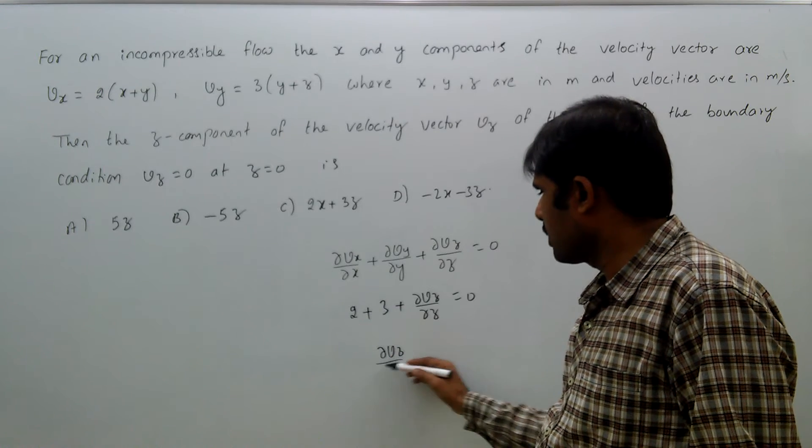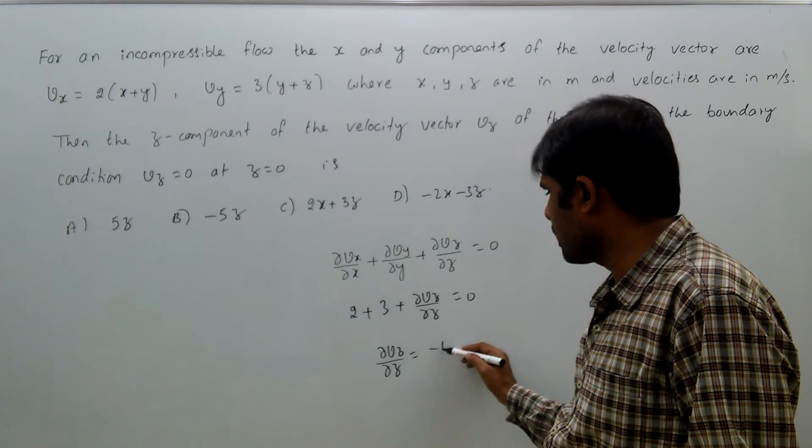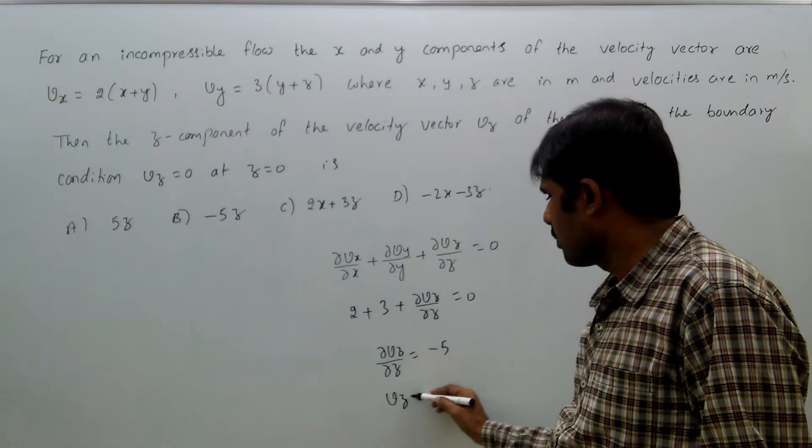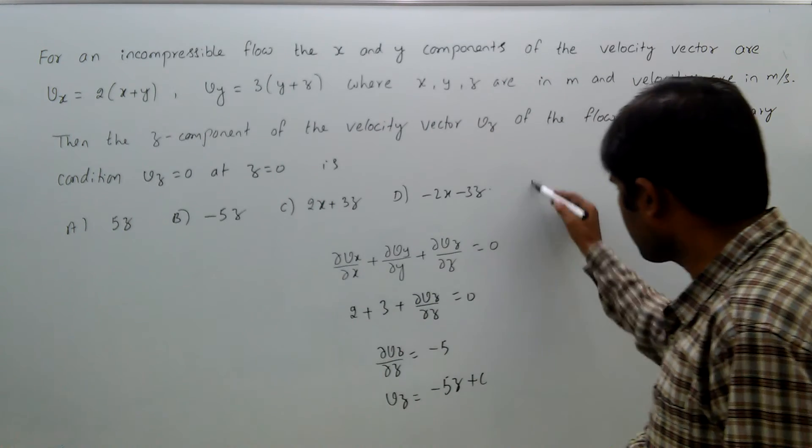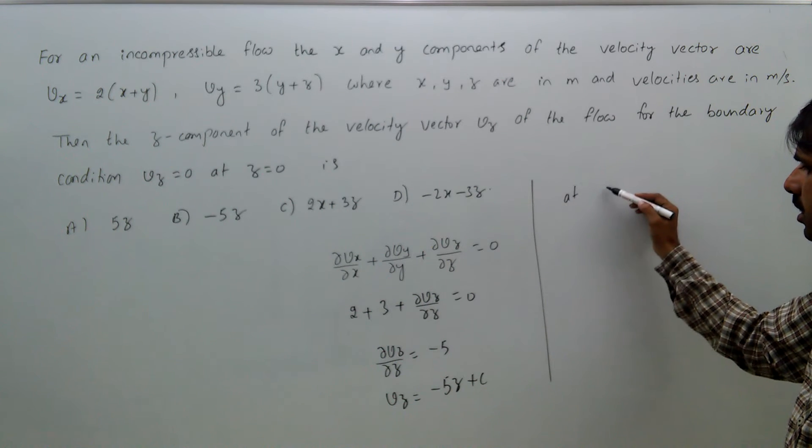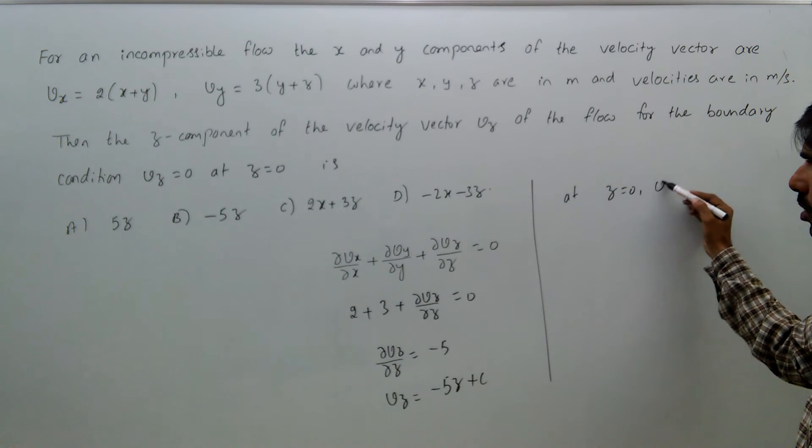Therefore, ∂vz/∂z = -5, or vz = -5z + c at z = 0.